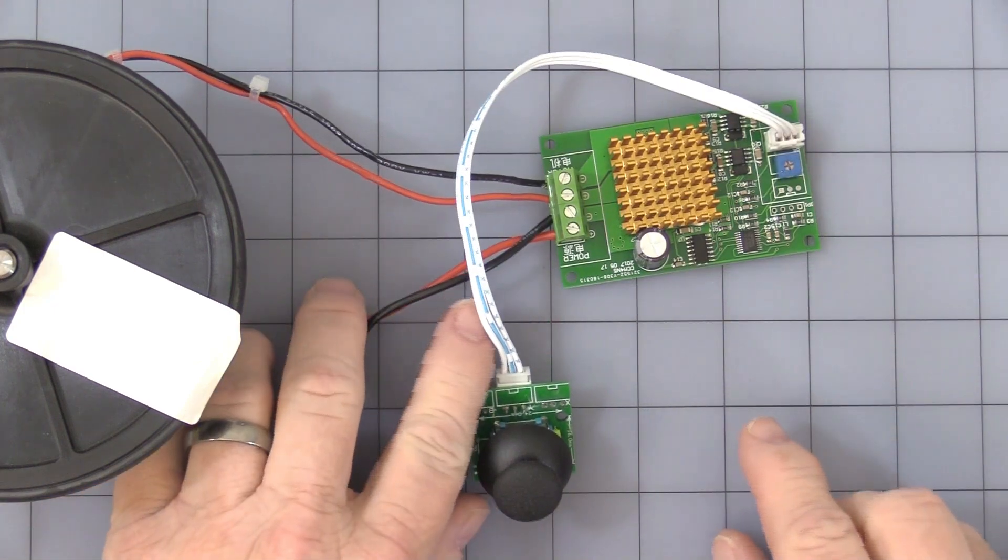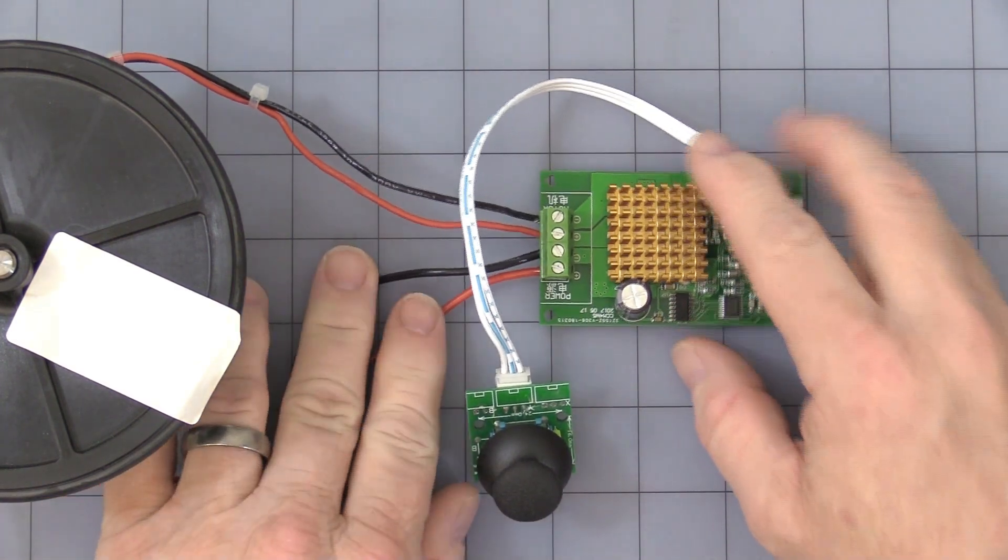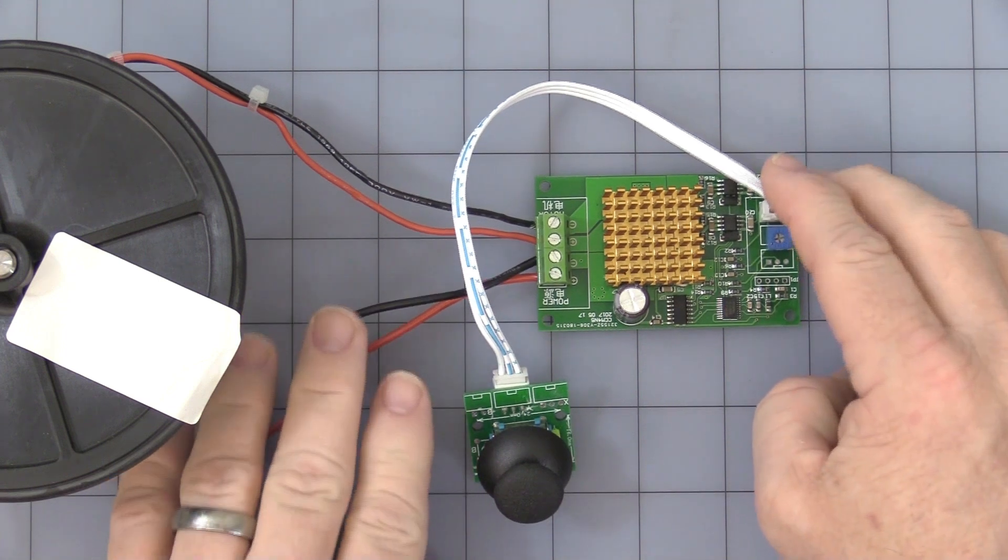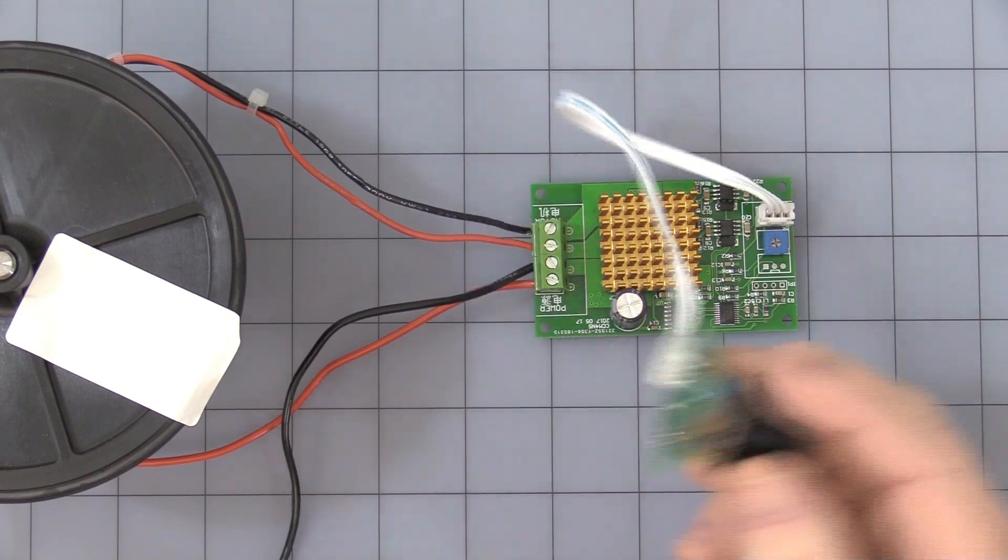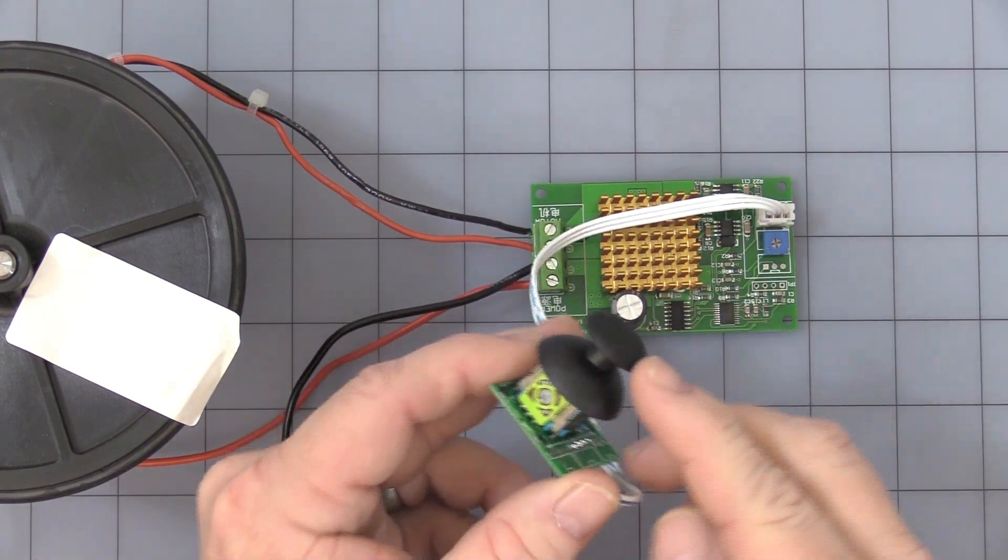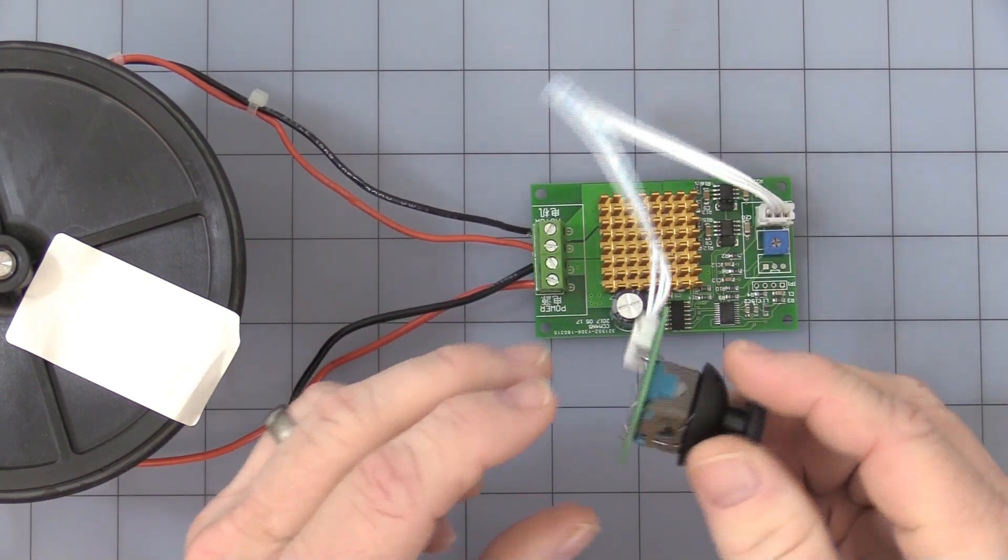This is your input power leads, obviously you must get the polarity correct or you'll damage the unit. But for your motor output you can flip them back and forth if you want to. If you find out it's not going in the right direction, you can simply turn the pot around either way.